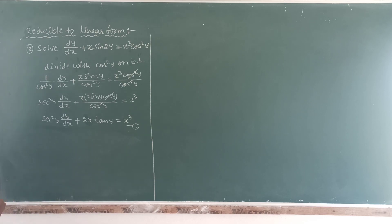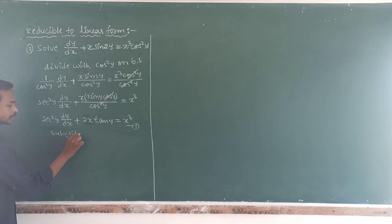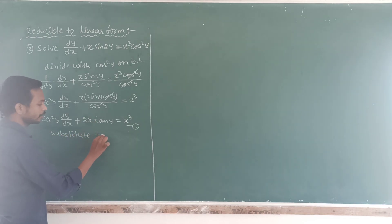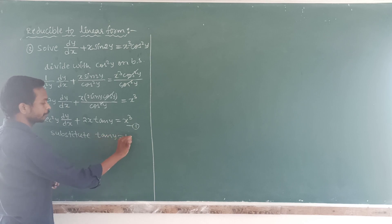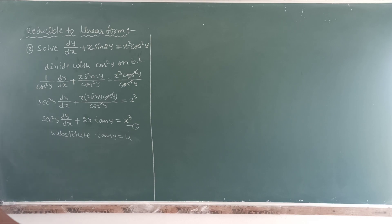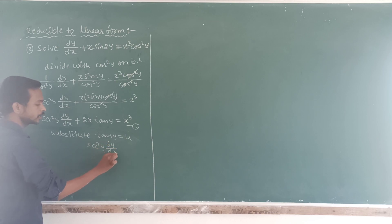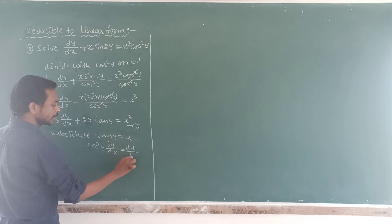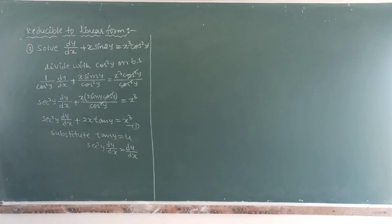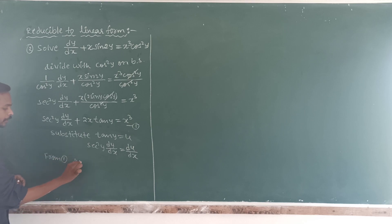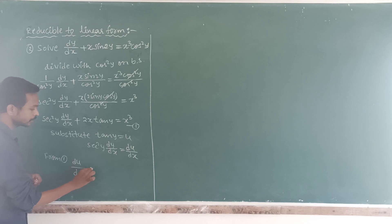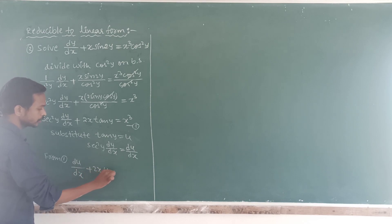We have to take a substitution. Substitute tan(y) = u. So the differentiation of tan(y) gives sec²(y) · dy/dx = du/dx with respect to x. Now substitute these two values into equation number 1. From equation 1, it will become du/dx + 2x·u = x³.